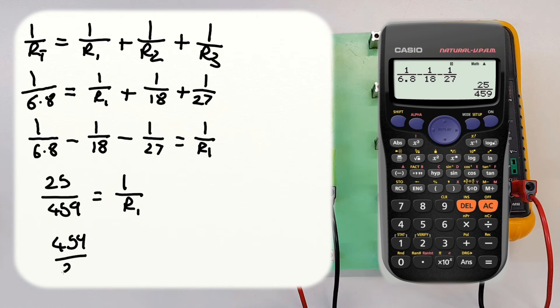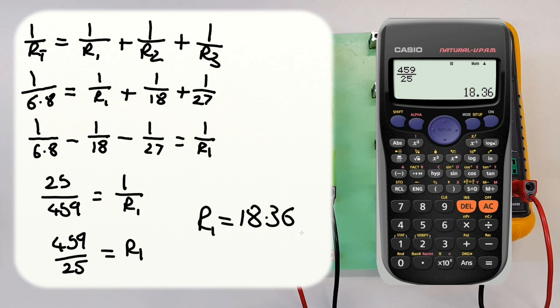So we've got 459 over 25 and that is equal to just R1 by itself. Really it's R1 over 1, but dividing by 1 the number just stays the same. So let's flip this upside down and see what we get. So we do 459 divided by 25, use the fraction button again over 25, and that's going to give us an answer of, again 459 over 25, super helpful. But if we push the SD button we'll see that we get a value of 18.36 ohms. So we should have a resistor that has a value of 18.36 ohms. So in this case R1 is equal to 18.36 ohms.